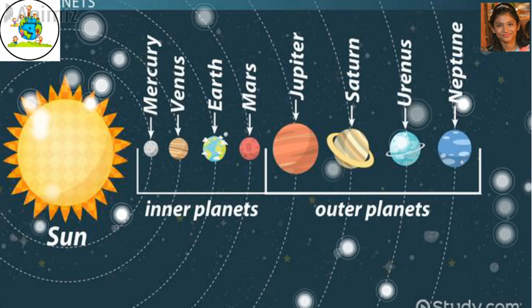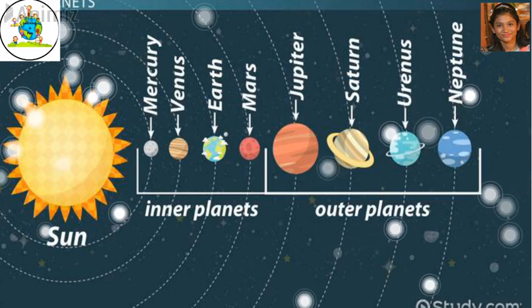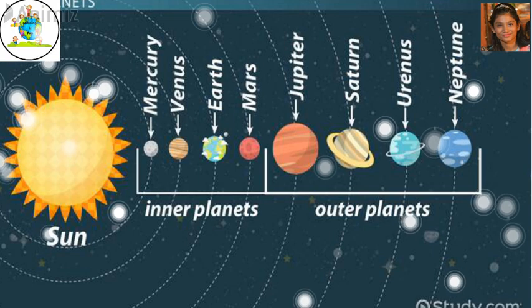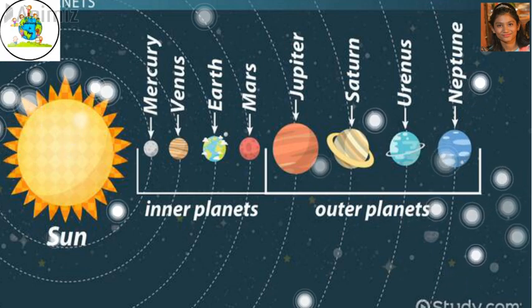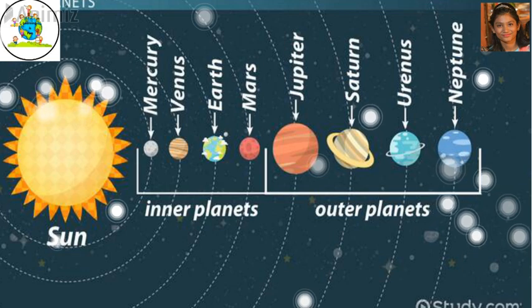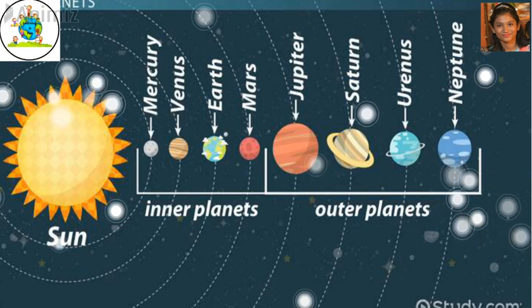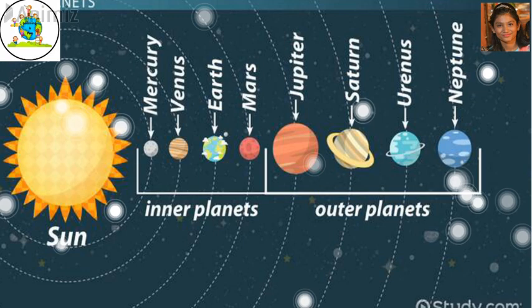The sun is a huge ball of very hot gases. It gives us heat and light. Plants also make their food using the sunlight. The solar system also consists of eight planets.